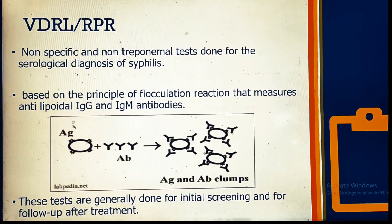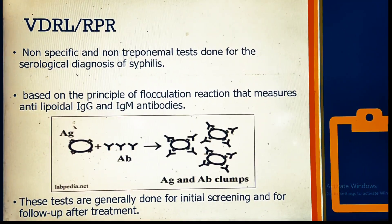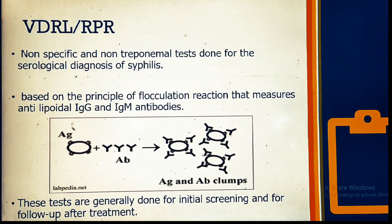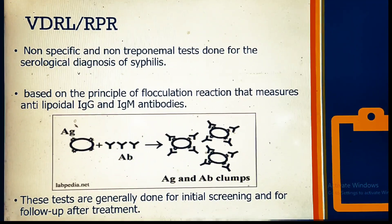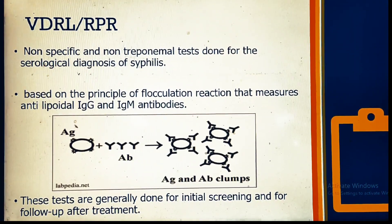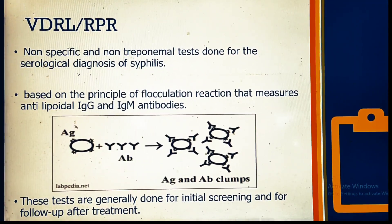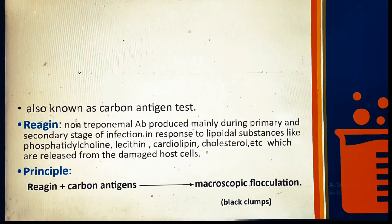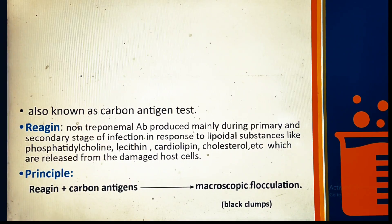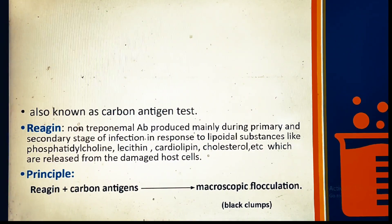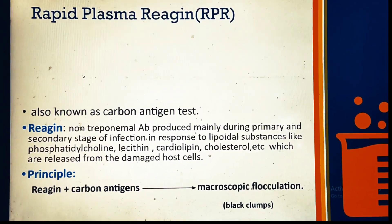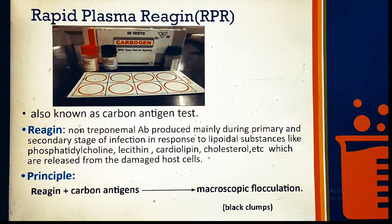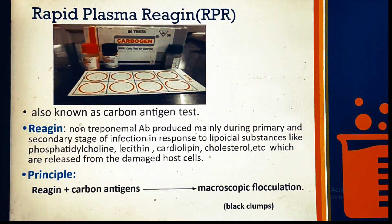Here in a diagram, we can see how the antigen-antibody clumps form and flocculation occurs. It is also known as the carbon antigen test. By using this antigen, we will identify reagin in a sample.